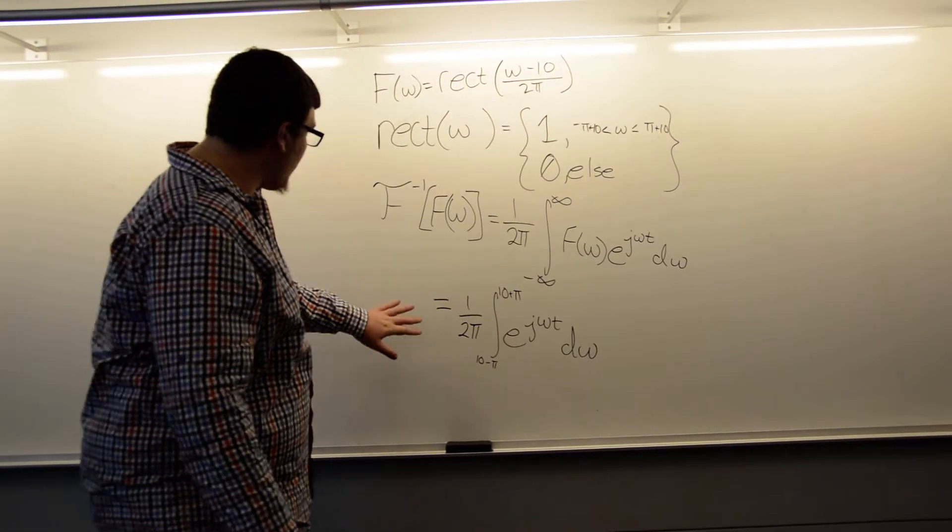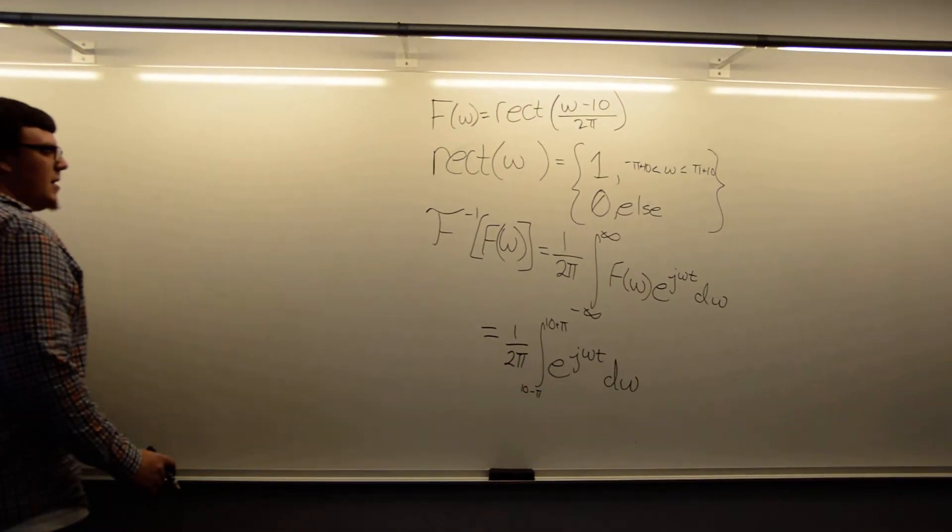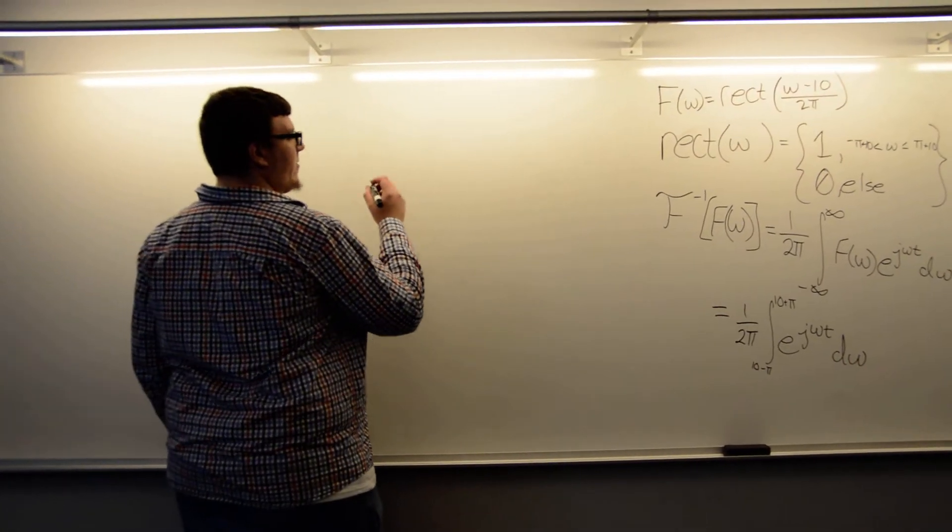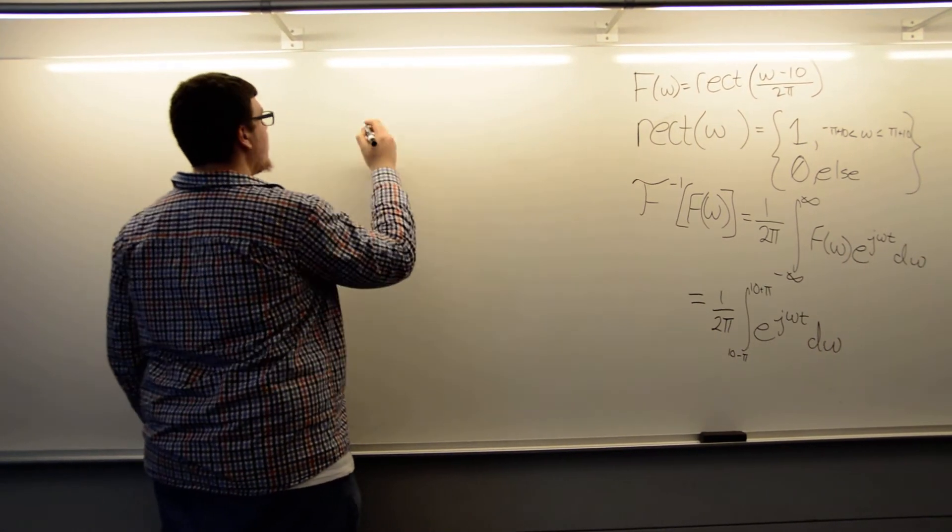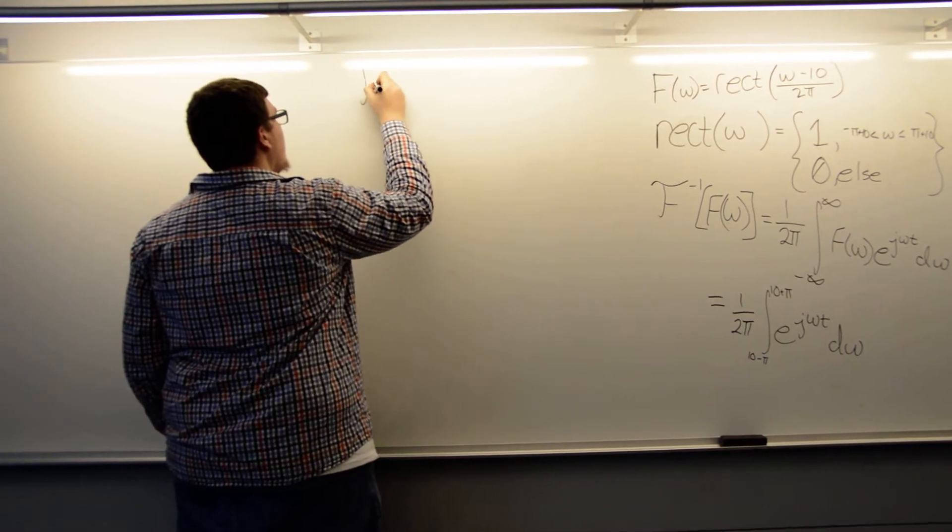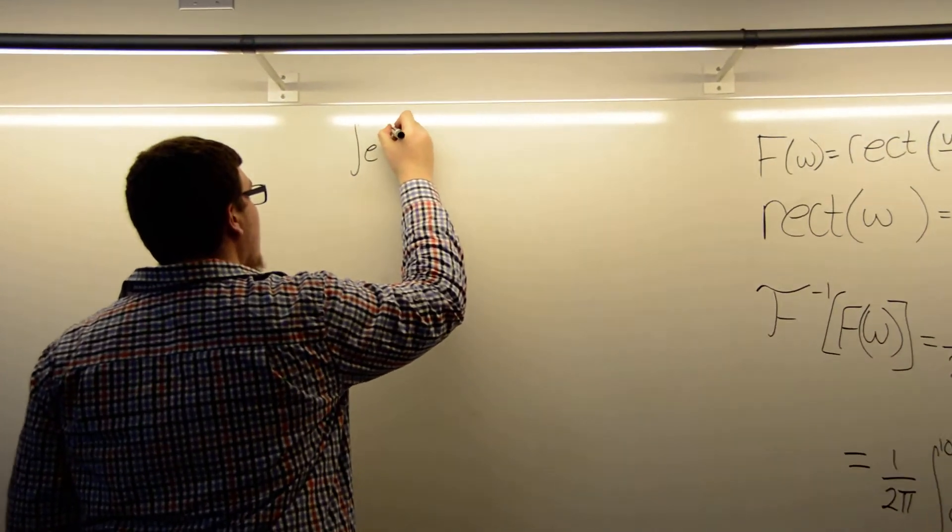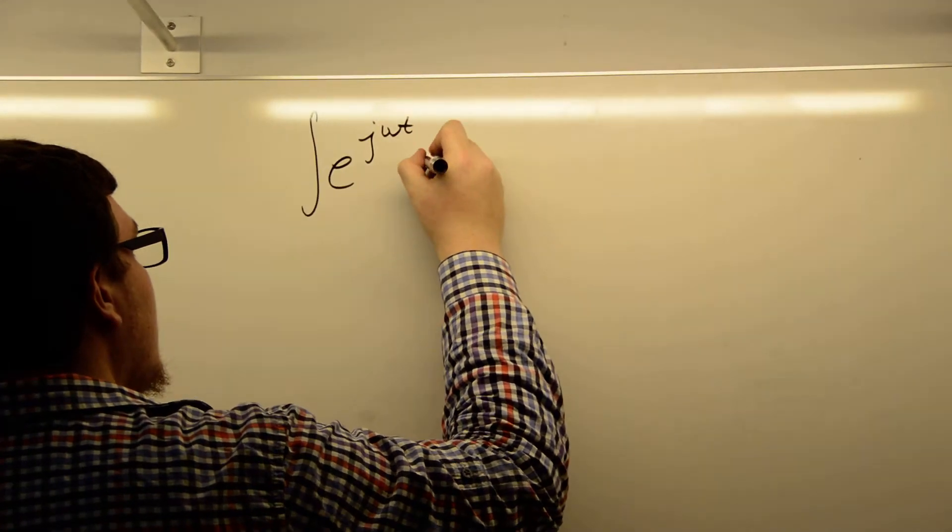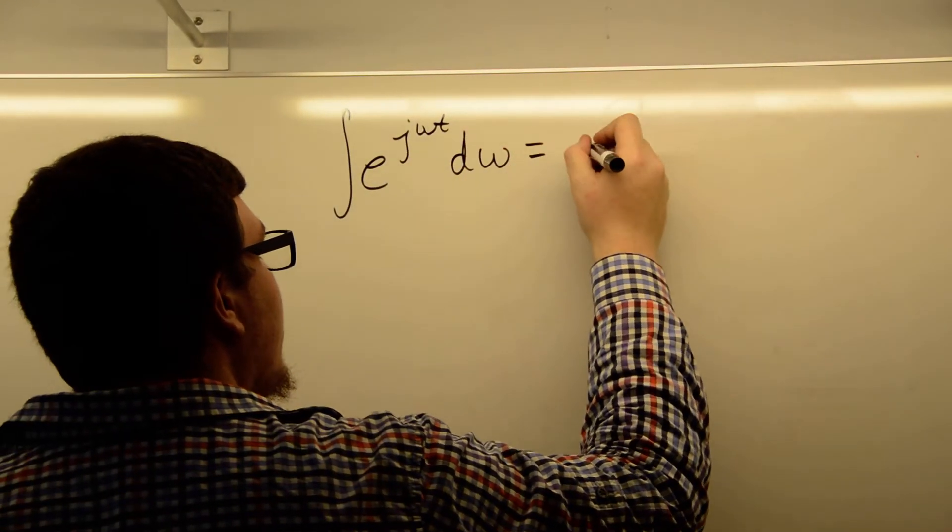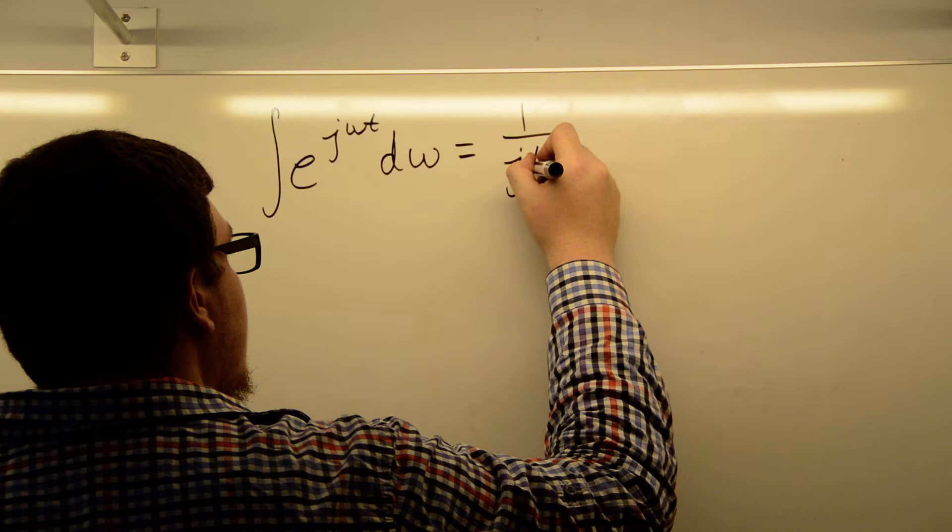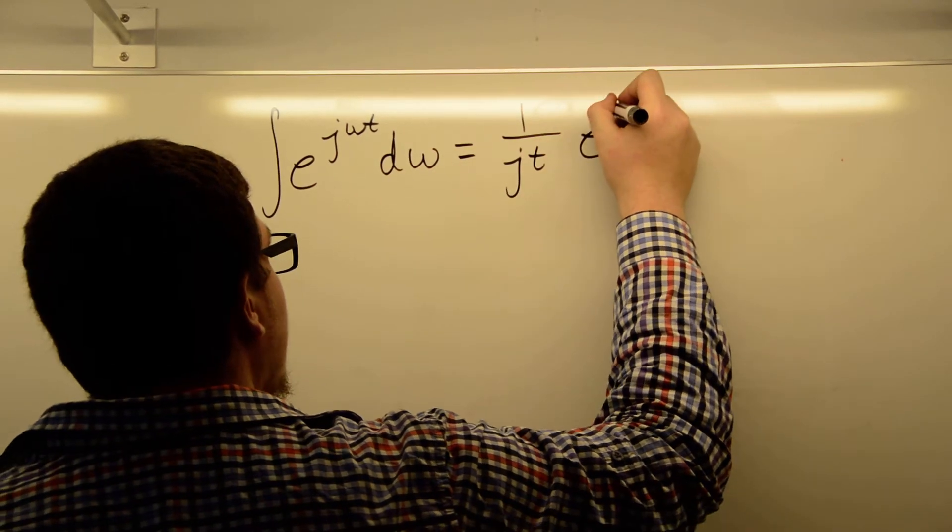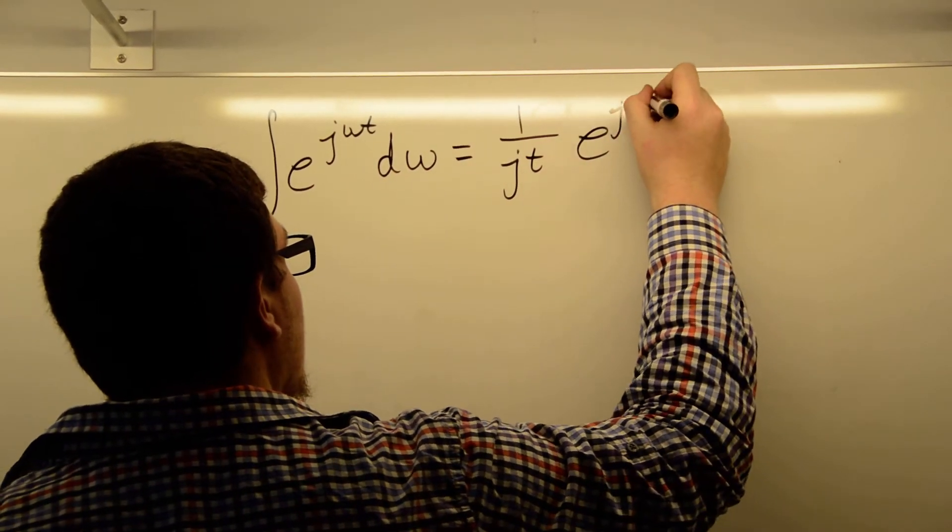So I'm going to run over here now a bit. So we have, if we evaluate this, we know that the integral of e to the jωt dω is going to equal 1 over jt times e to the jωt.